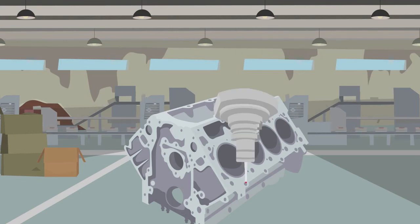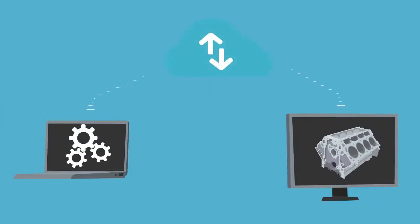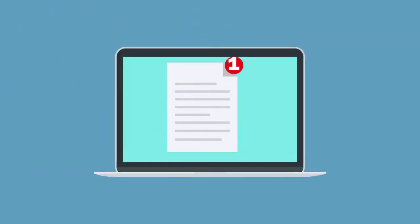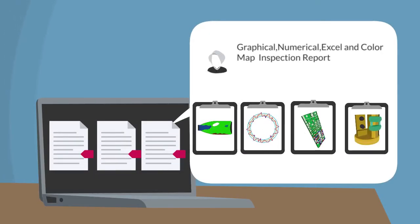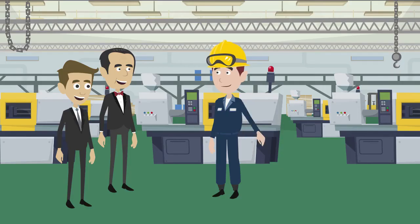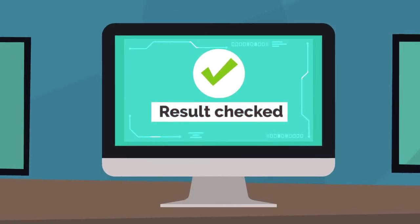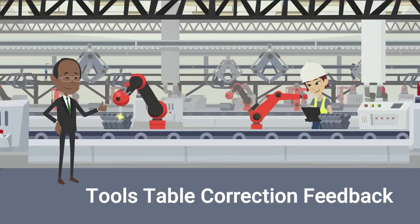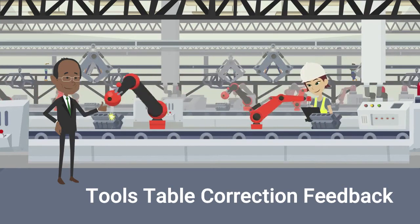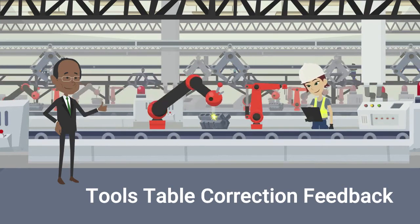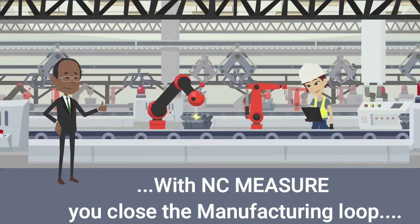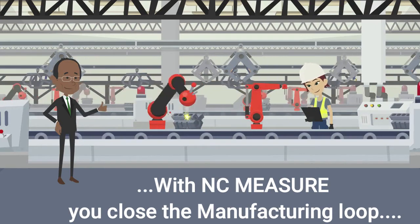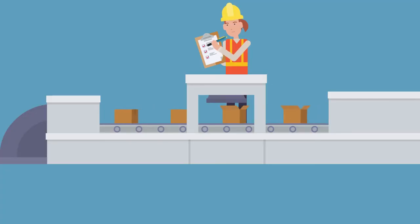The inspection points are analyzed by NCMeasure, which provides a dimensional report like a CMM with different formats and styles suitable for any application. NCMeasure can also evaluate the results and send back to the machine the toolware values. Now the manufacturing loop is fully closed and we will produce better parts and less scrap.